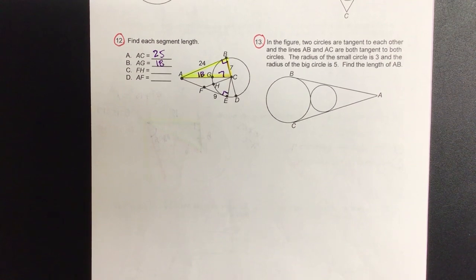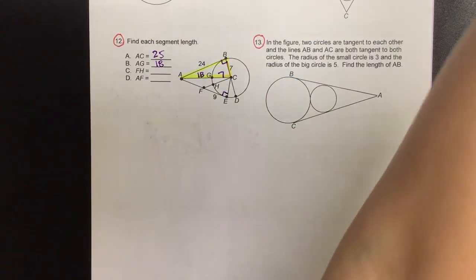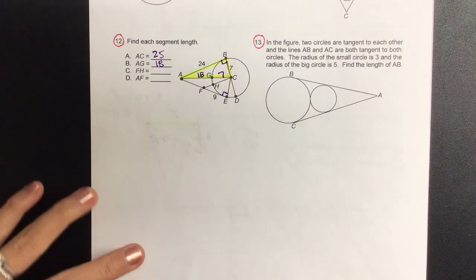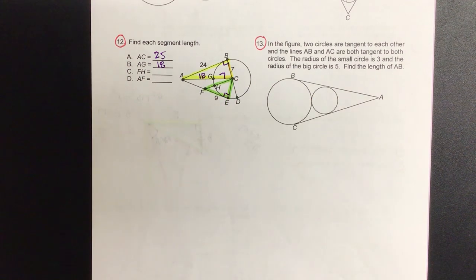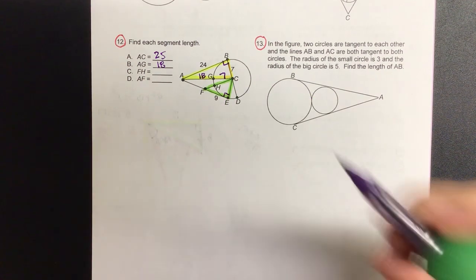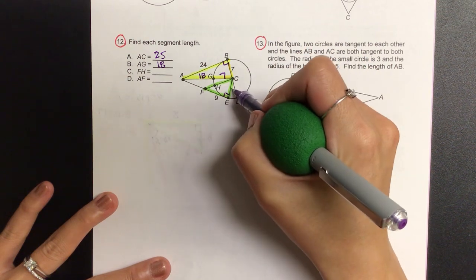And then let's go to our FH. Let's take a different color and highlight the right triangle. Could I also write that CE as a radius, so it's also a 7?